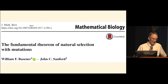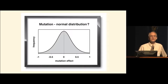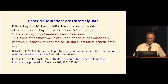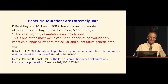Fisher envisioned mutations arising with effects ranging from very bad to very good, with neutrals centered, so he could ignore the impact of mutations because they were having a net neutral effect. The problem is we now know beyond any doubt that beneficial mutations are very rare and non-neutral mutations are consistently deleterious. Kitely and Lynch stated that the vast majority of mutations are deleterious — this is one of the most well-established principles of evolutionary genetics, supported by both molecular and quantitative genetic data.